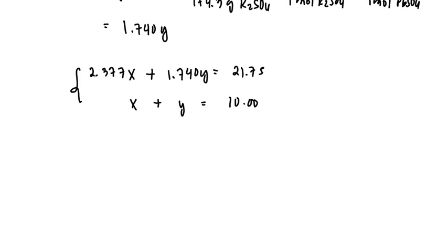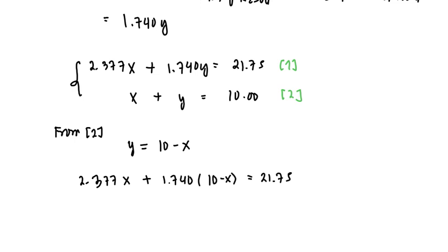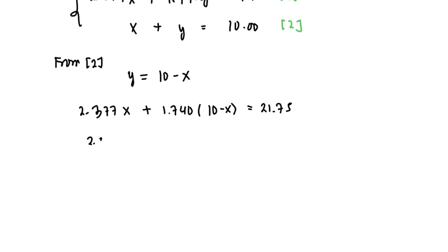We can use substitution elimination method to solve for x and y. From equation two, we can solve for y in terms of x as y equals 10 minus x, and we substitute this into equation one so that y becomes 10 minus x.